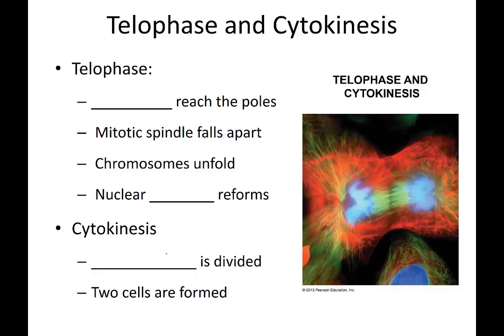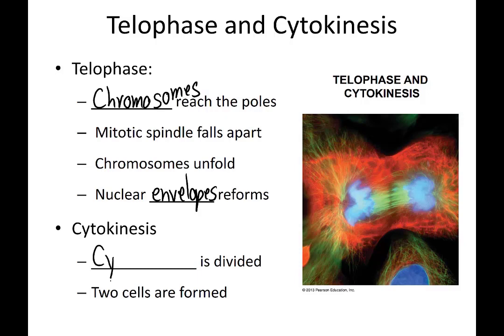The final stage of mitosis is telophase. Telophase occurs when the chromosomes reach the opposite poles. The mitotic spindle — these clusters of microtubules — breaks apart, as its job is finished. The chromosomes, which had been condensed during mitosis, begin to unfold and decondense. Lastly, two nuclear envelopes reform around each cluster of chromosomes. This is happening at the same time as cytokinesis, the division of the cytoplasm. Once both daughter nuclei are formed and the cytoplasm is divided, we now have two daughter cells — cell division has occurred.